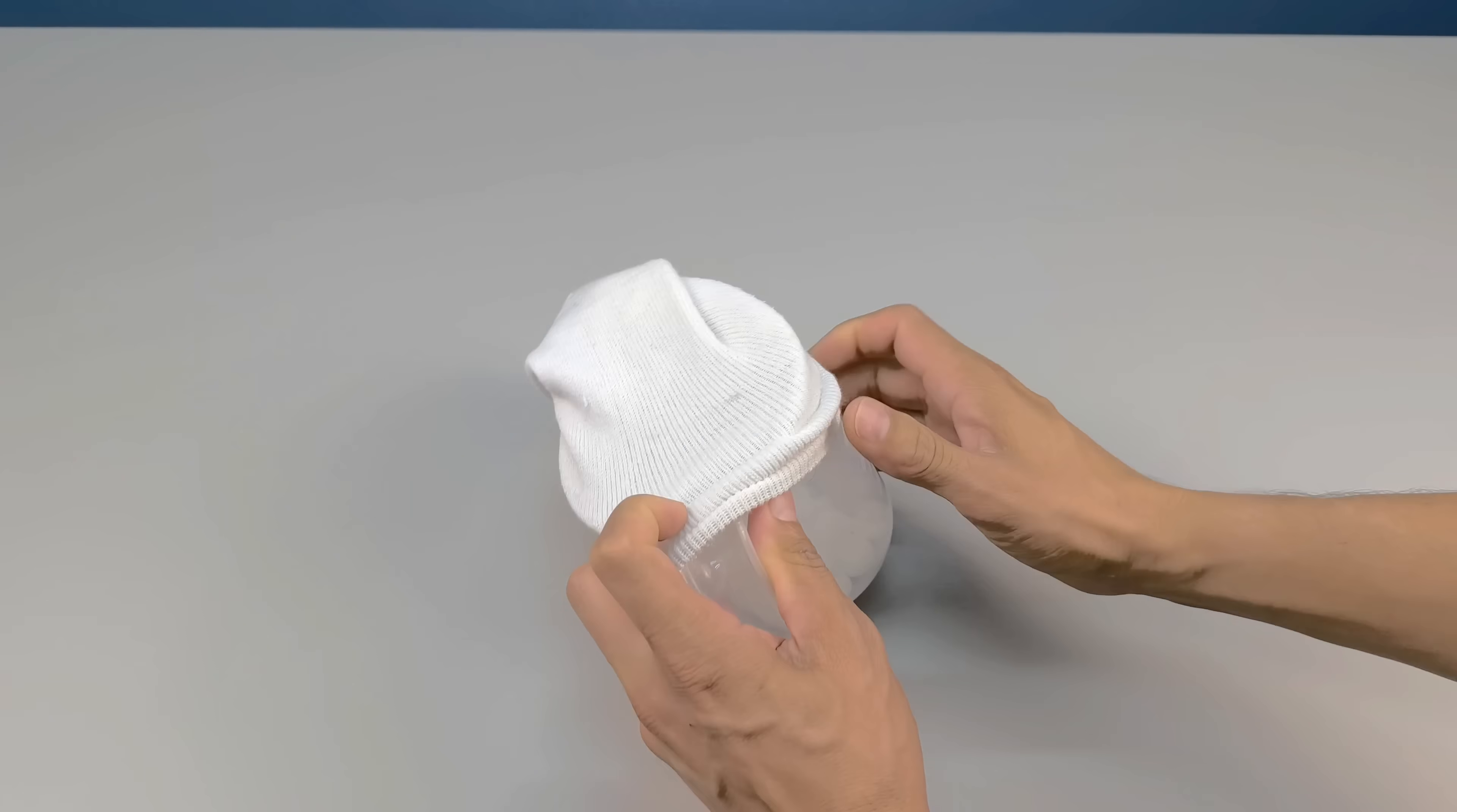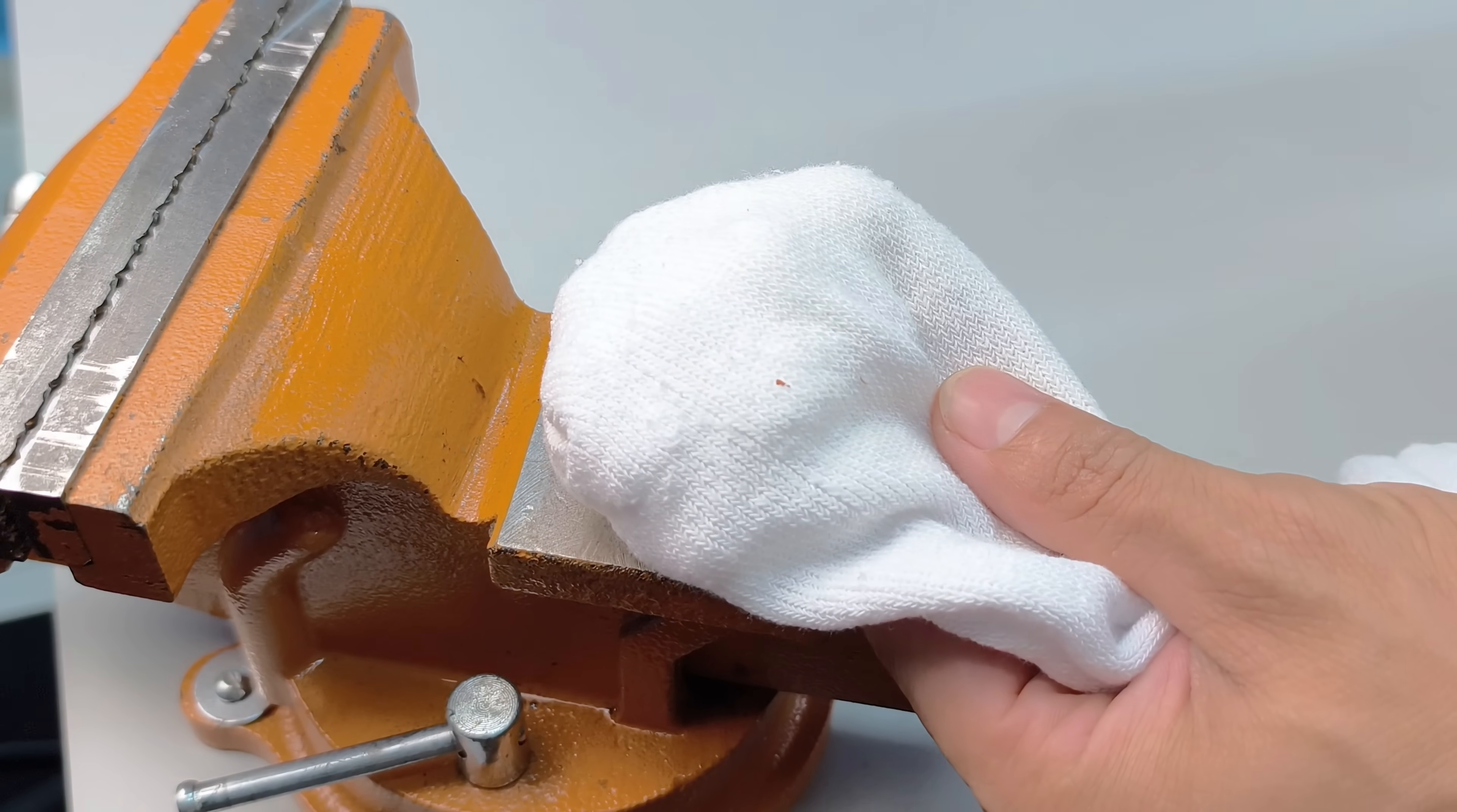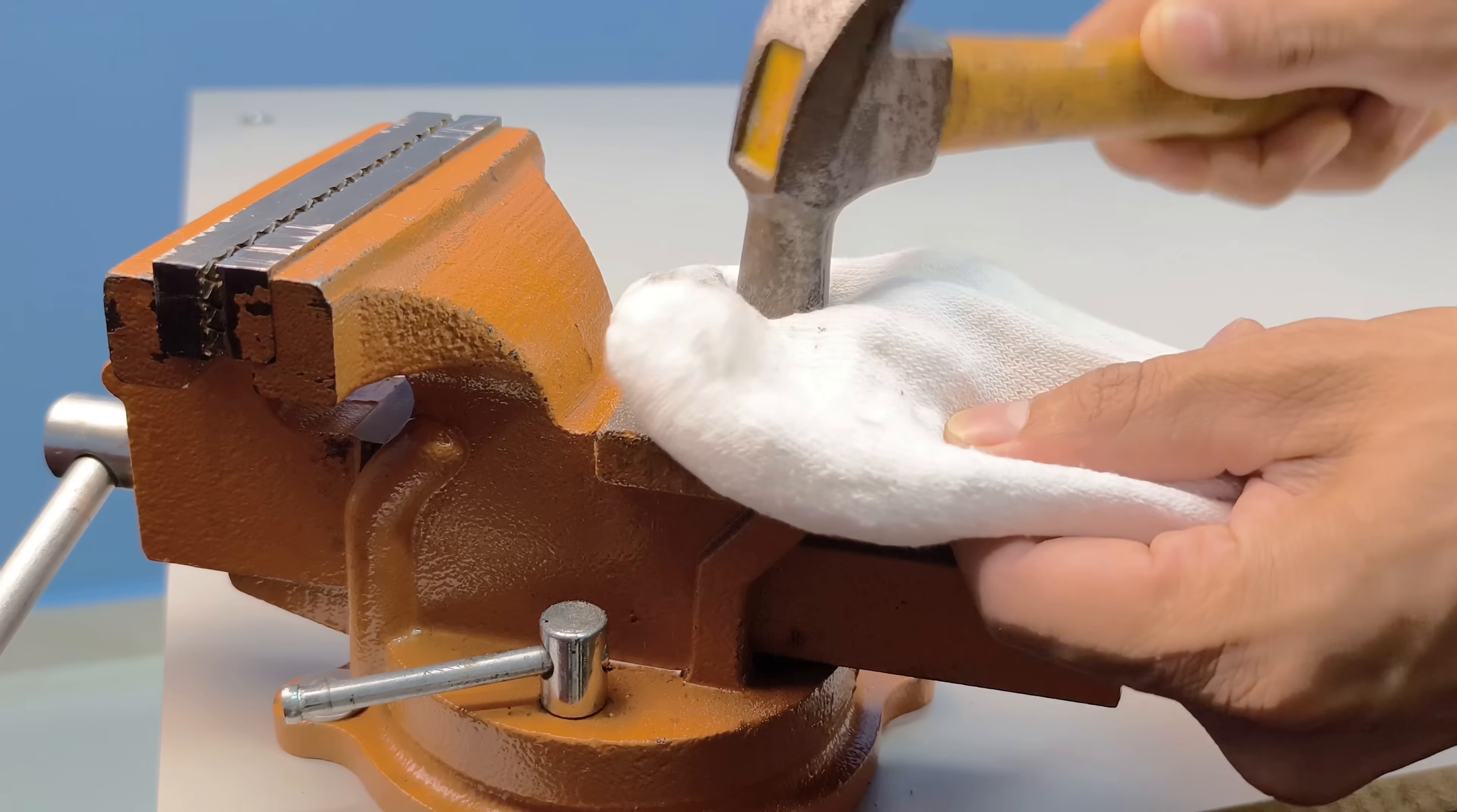If possible, tie a tight knot at the top to ensure the balls don't slip out during use and are well compacted within the fabric. Next, place the sock on a flat, sturdy surface, preferably metal. Using a hammer, begin tapping it gently. The goal is to break all the pellets into a fine powder, and this must be done patiently to avoid tearing the fabric.